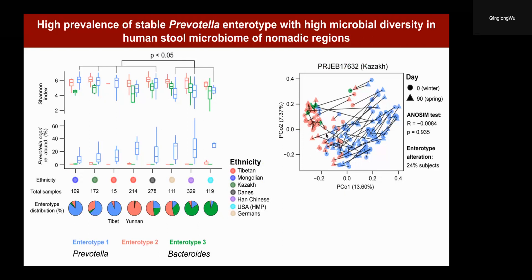We also performed a single analysis of a longitudinal Kazakh dataset and found that the Prevotella enterotype is relatively stable, as we did not see significant change during seasonal shifts. We rarely observed a shift away from the Prevotella enterotype, so we think this enterotype in Central Asian nomadic populations is quite stable, which may be related to their nomadic dietary pattern.